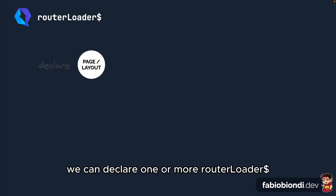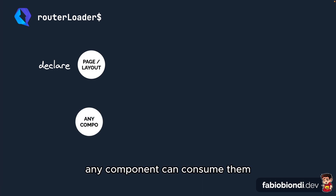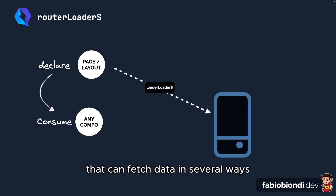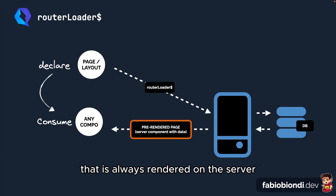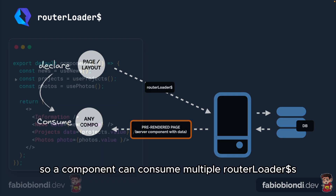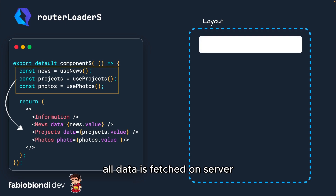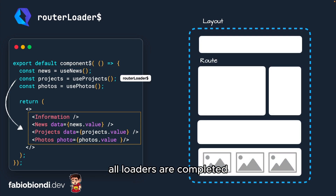We can declare one or more router loaders in index or layout.tsx files, and any component can consume them. The router loader is invoked on the server and can fetch data in several ways. Data is returned to the component, which is always rendered on the server. A component can consume multiple router loaders, and all data is fetched on the server — the page is rendered only when all loaders are completed.